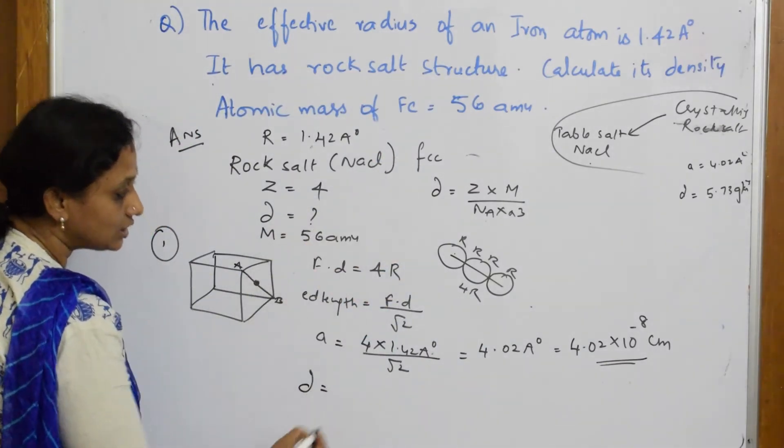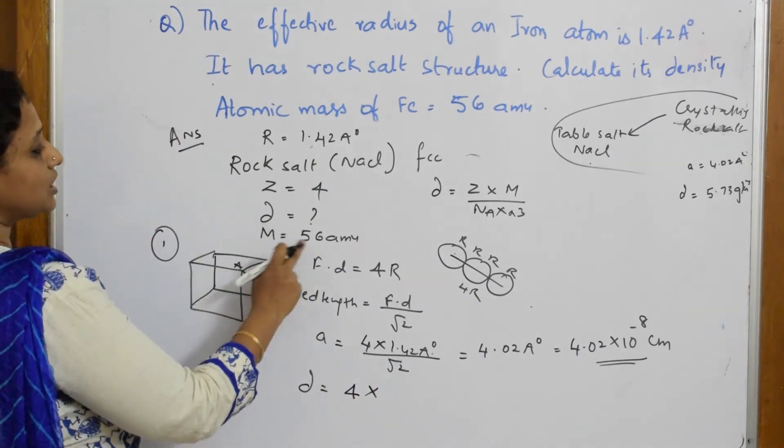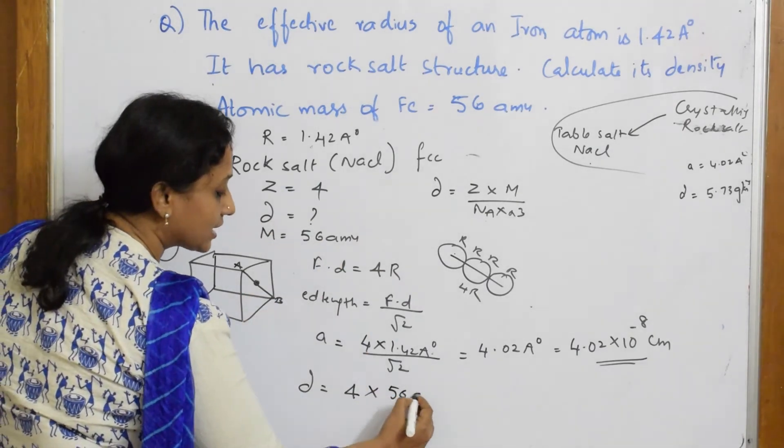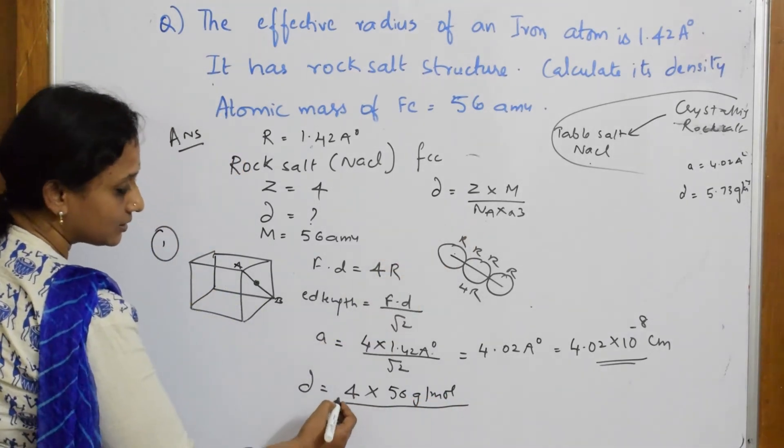Now I have got a value of A, substitute in this formula. So density is equal to Z. What is Z now? 4 into molar mass. What is molar mass? 56 gram per mole divided by Na.